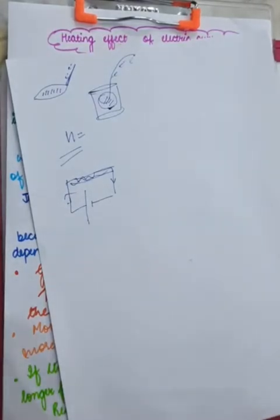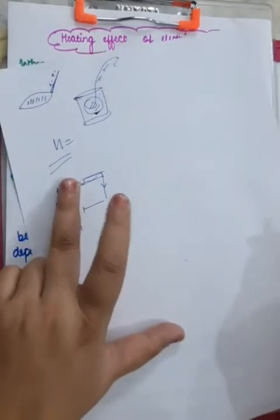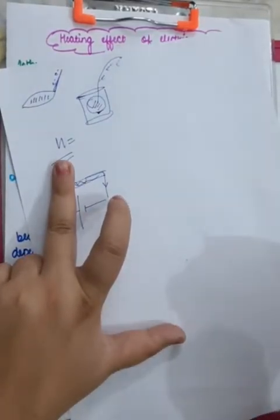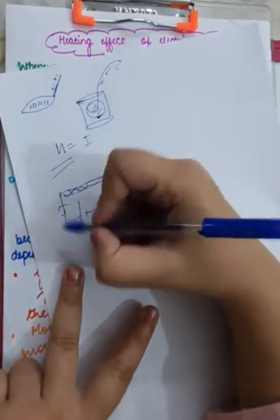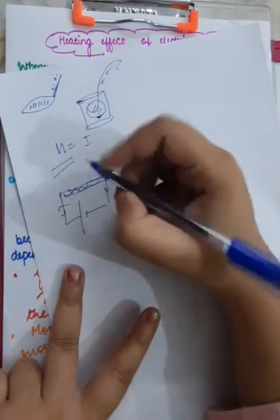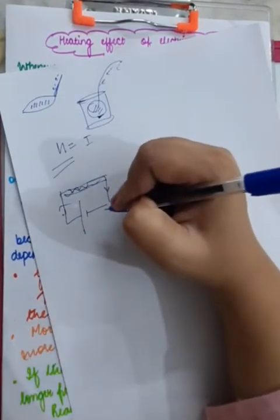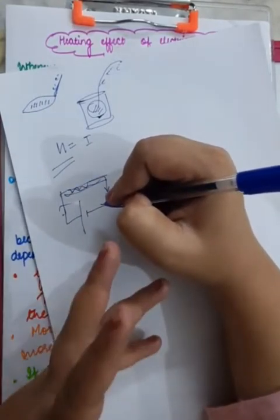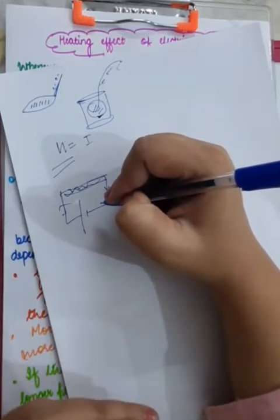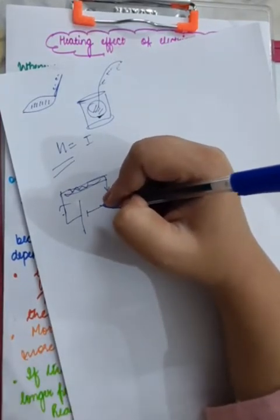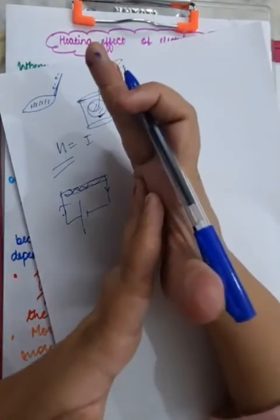First of all, now we will discuss on what factors heat produced will depend. See if the current flowing is more, if more and more electrons are flowing, they will experience more and more collisions. So, in more and more collisions, they will simply produce more and more heat jab collide kerti hai chizeh.